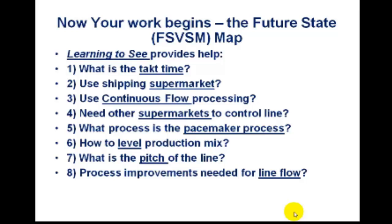Now let's start work on the target condition — the future state value stream map. If you turn back in that book a tab or two, you're going to see eight questions they propose to help you develop it. The first thing we have to do is determine the takt time — the rhythm of production — but we'll get into all these in a little more detail. I just want to run through them first.